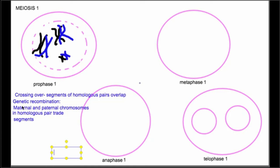Genetic recombination is when maternal and paternal chromosomes within a homologous pair trade segments with each other. So prophase I is always about the nucleus dissolving, chromosomes condensing, and spindle fibers forming. That's one type of shuffling — crossing over and genetic recombination. Another type of shuffling is called independent assortment.